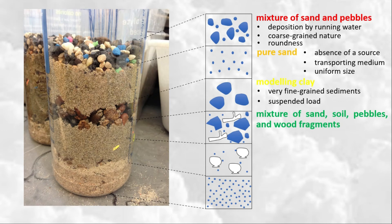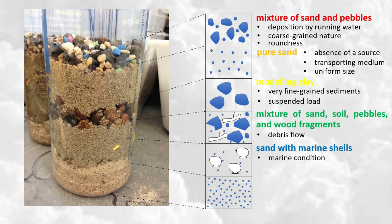The next layer is a mixture of sand, soil, pebbles, and wood fragments. Poorly sorted sediment materials containing relatively large floating debris surrounded by fine-grained material are typical of debris flow deposits — a form of mass wasting process. Next, we have sand with marine shells. The presence of marine shells indicates marine conditions. This layer could represent a period in time when sea level was high, meaning the area was below sea level.